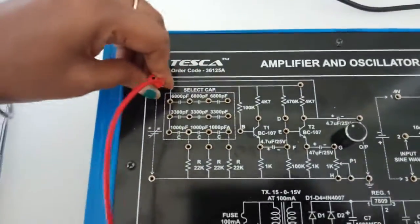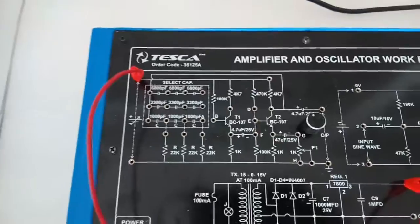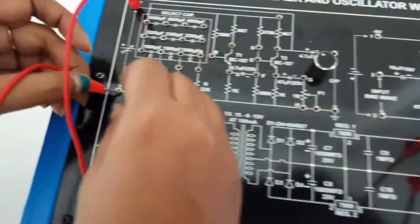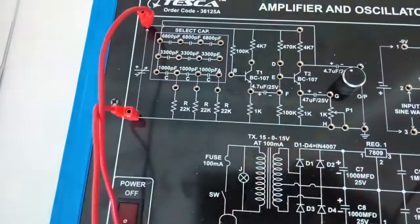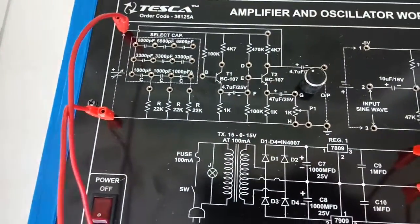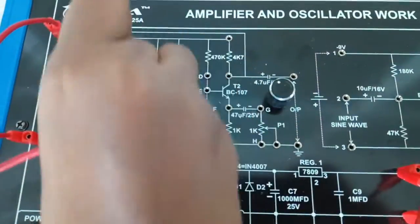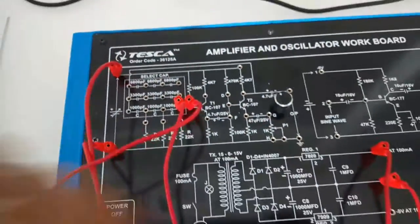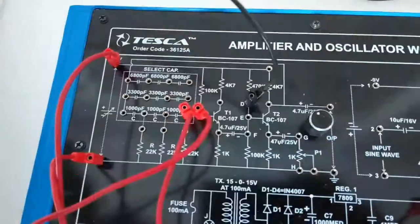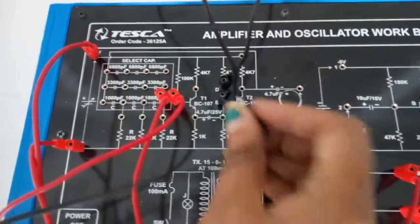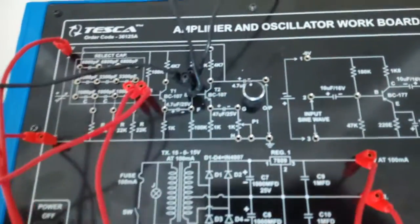First, we will connect the power supply: plus 9 volts with plus 9 volts, ground with ground. After that, we will connect A-B, D-E, and E-F.